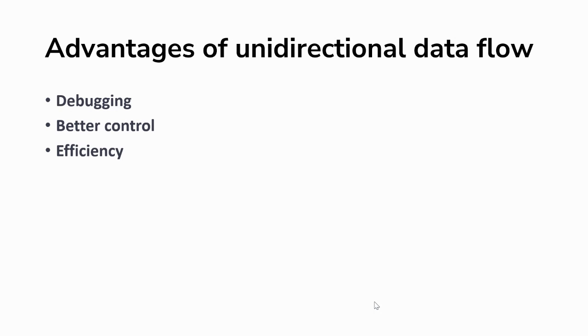So these are three advantages of unidirectional data flow in React.js. That was the detail of how unidirectional data flow in React works. Hope you liked this video.